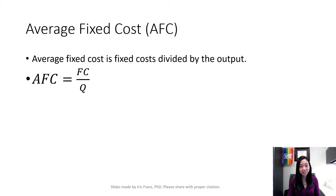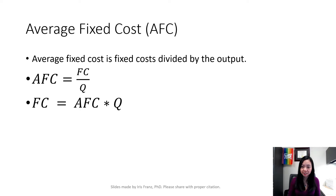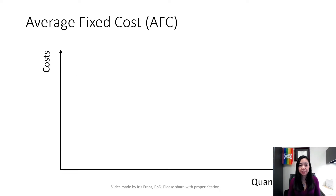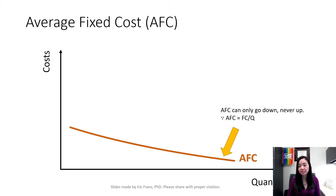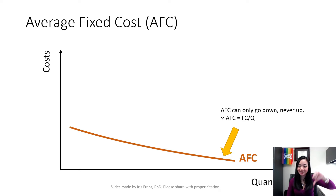Average fixed cost is equal to fixed cost divided by quantity. We can also say fixed cost is equal to average fixed cost times quantity. If you put average fixed cost on a diagram where cost is on the vertical axis and quantity is on the horizontal axis, you can see that average fixed cost is going down and down. Because average fixed cost equals fixed cost divided by quantity, and your fixed cost remains the same but quantity is going up, therefore your average fixed cost is going down and down. It has nowhere else to go except down.